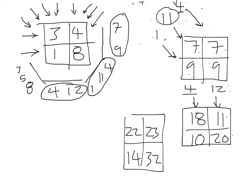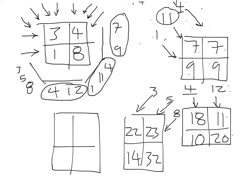I have one last direction to pass information through. From that direction I got three, five, and eight. Drawing one final matrix: eight plus thirty-two gives forty, five plus twenty-three gives twenty-eight, five plus fourteen gives nineteen, and three plus twenty-two gives twenty-five. Now I've constructed my full data set.